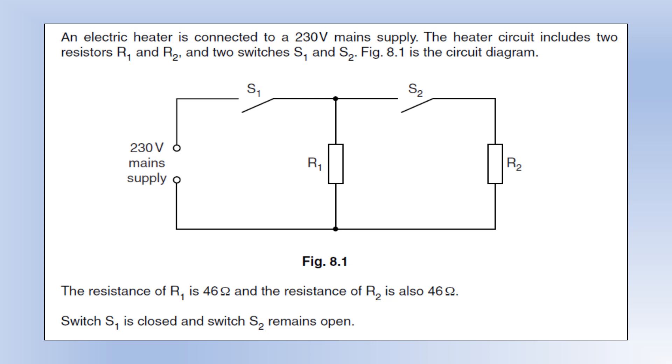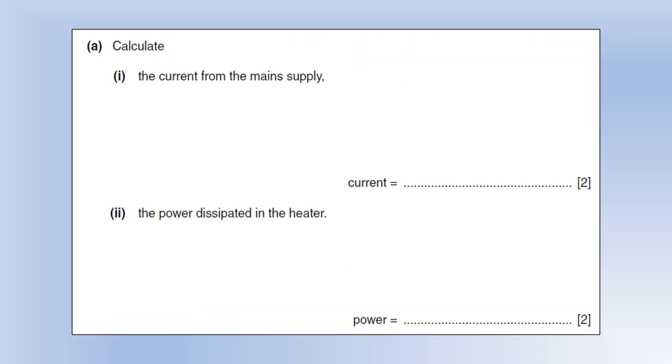The resistance of both is 46 ohms, and S1 is closed so current can go through S1, but S2 is open so R2 is not currently in the circuit. The only current we're going to get is flowing through R1.